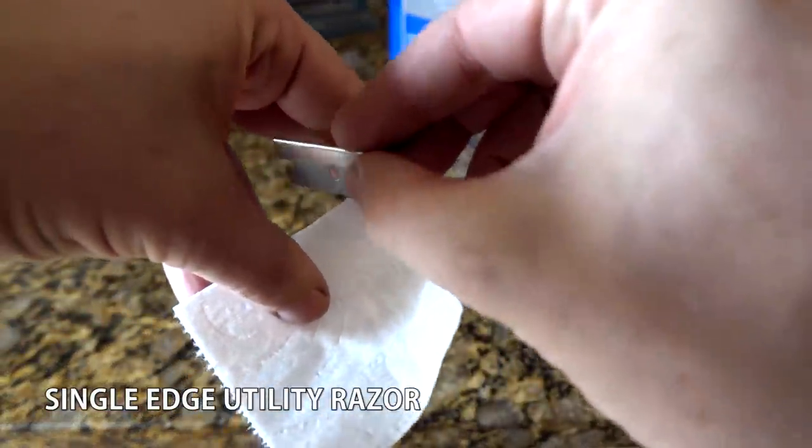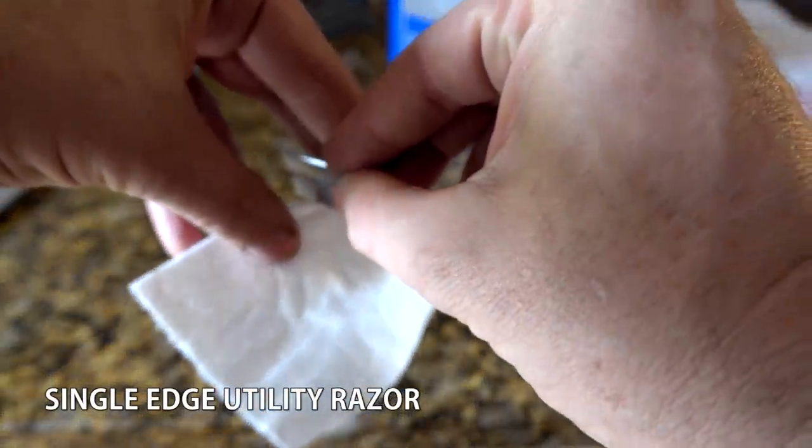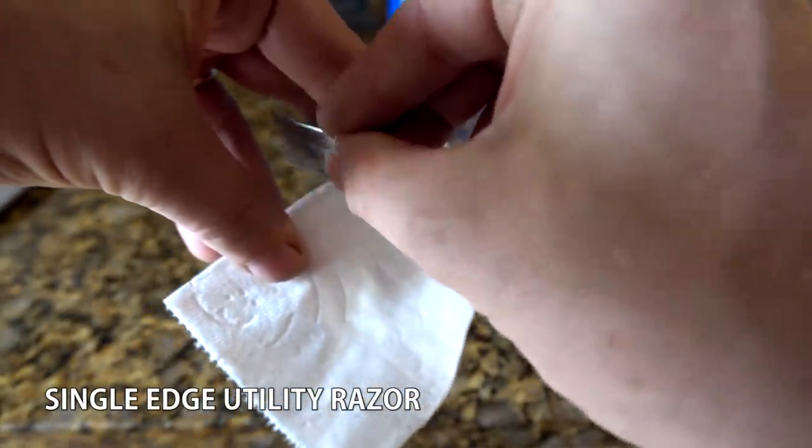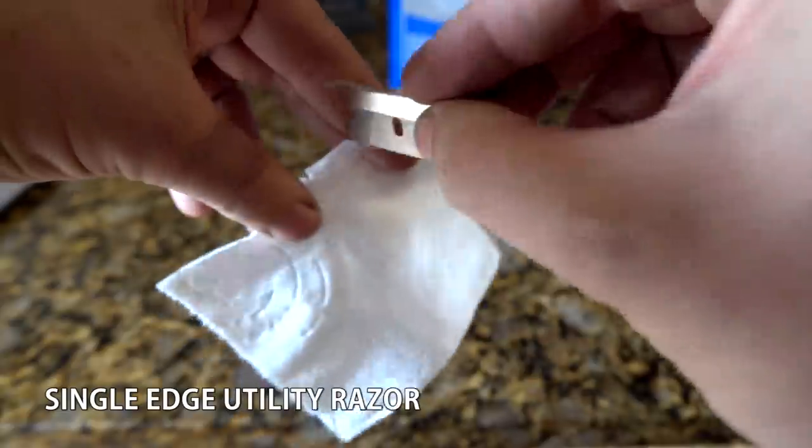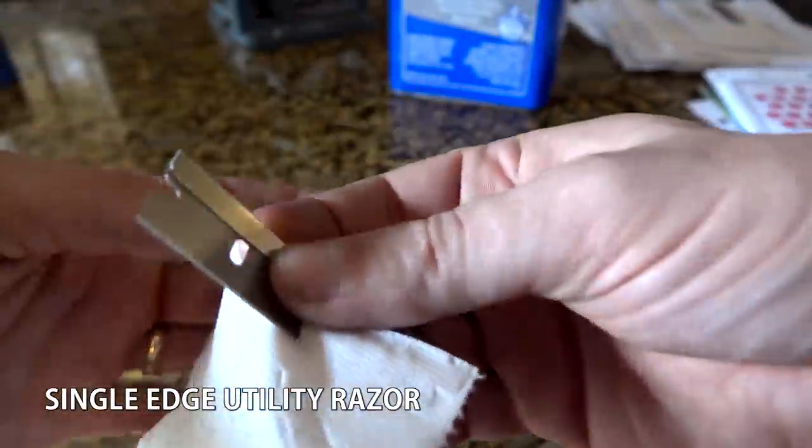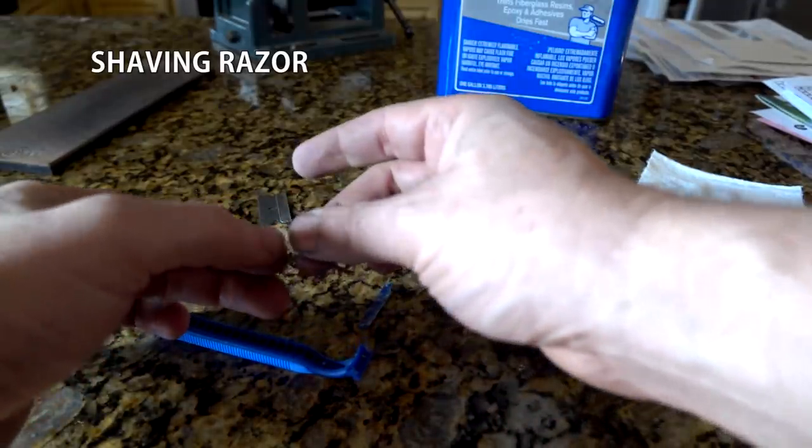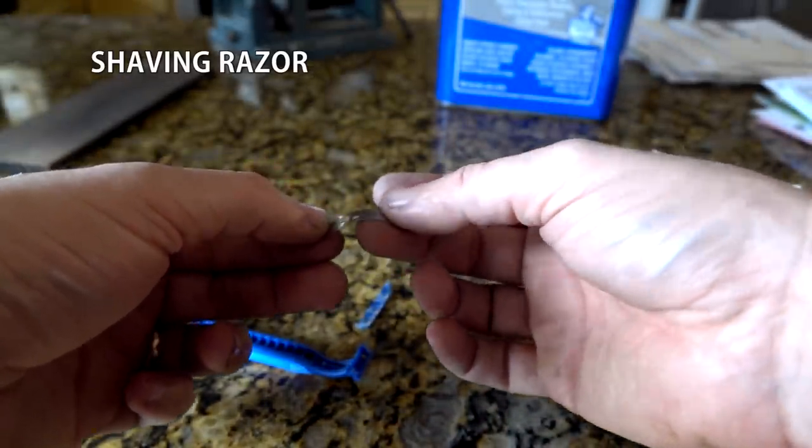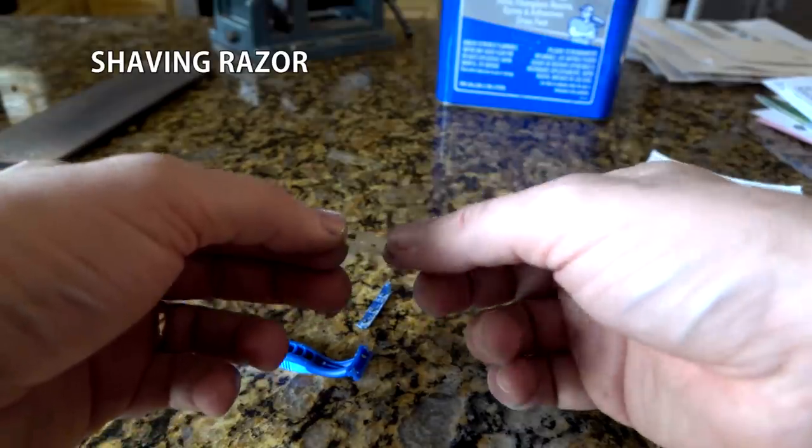So, this is a single-edge utility razor straight from Home Depot. And as you can see, it should be really sharp, but it's not doing much on this two-ply toilet paper. It cuts it a little bit. Here's a shaving razor I liberated from its handle. Very thin.